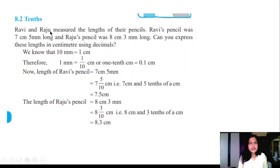Tenths. Ravi and Raju measured the length of their pencils. Ravi's pencil was 7 cm 5 mm long and Raju's pencil was 8 cm 3 mm long. Can you express these lengths in centimeters using decimals? You know that 10 mm is equal to 1 cm. Therefore, 1 mm is equal to 1 by 10 cm or one-tenth cm, which is 0.1 cm.